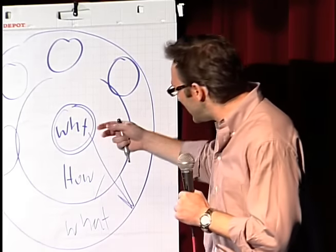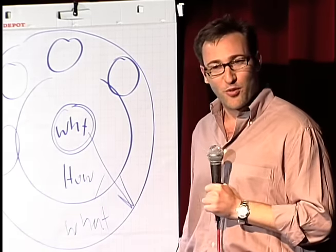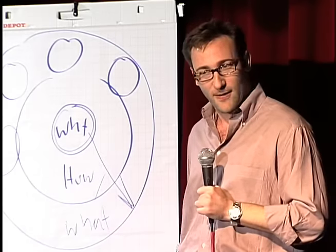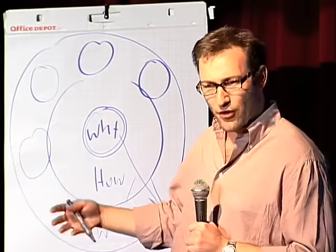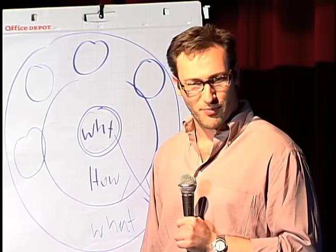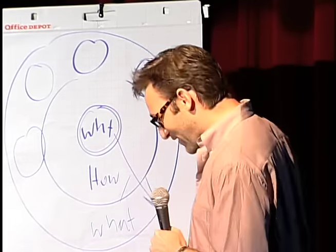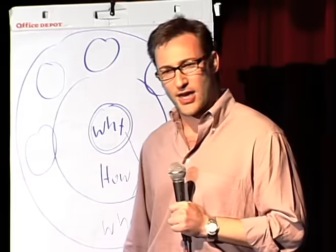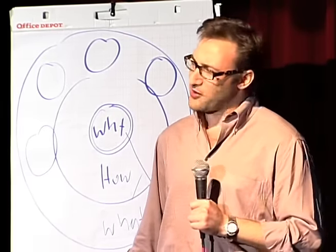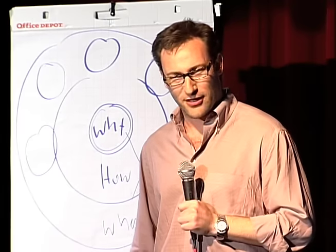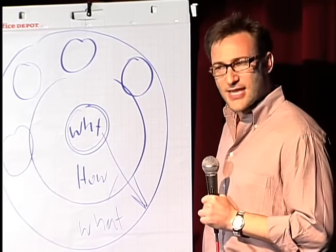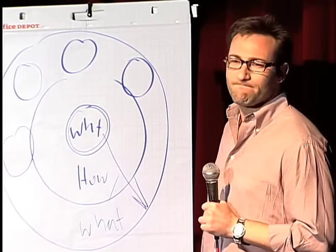And lo and behold, look what happened. The people who believed in the Wright brothers' dream worked with them with blood and sweat and tears. The others just worked for the paycheck. And they tell stories of how every time the Wright brothers went out, they would have to take five sets of parts, because that's how many times they would crash before they came in for supper. And eventually, on December 17th, 1903, the Wright brothers took flight. And no one was there to even experience it. We found out about it a few days later.